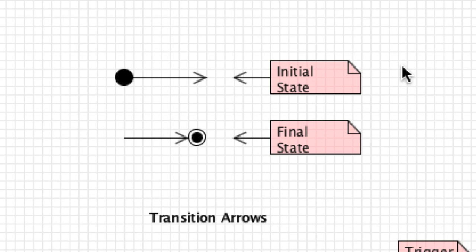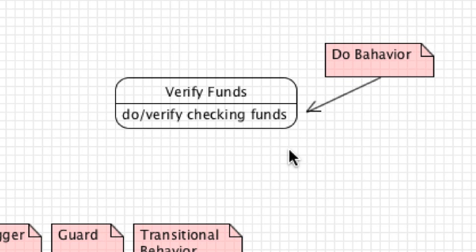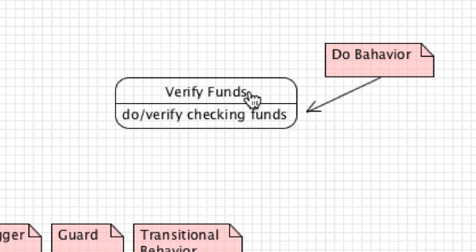State diagrams normally have an initial state and a final state. You're also going to be able to document behaviors that occur while you are currently in a state by listing 'do' with a slash and then documenting exactly what is going on — for example, while in the 'verify funds' state it is going to be verifying checking funds. This is referred to as a 'do' behavior.